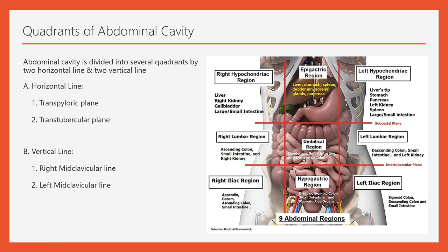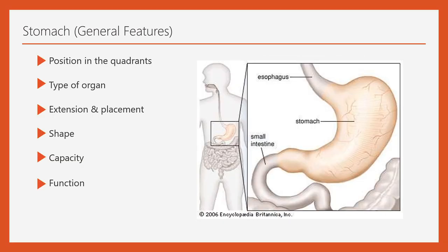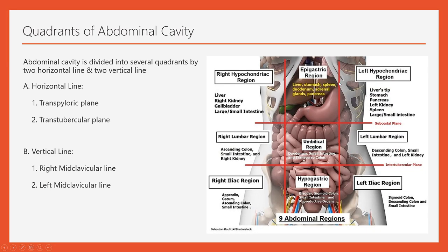Sometimes a written examination question asks you to join the levels of the abdominal quadrants with their clinical importance — you must draw and label them accordingly. Now, the stomach lies mainly in the epigastric region, the left hypochondriac region, and a little in the umbilical region — these three regions contain the stomach.